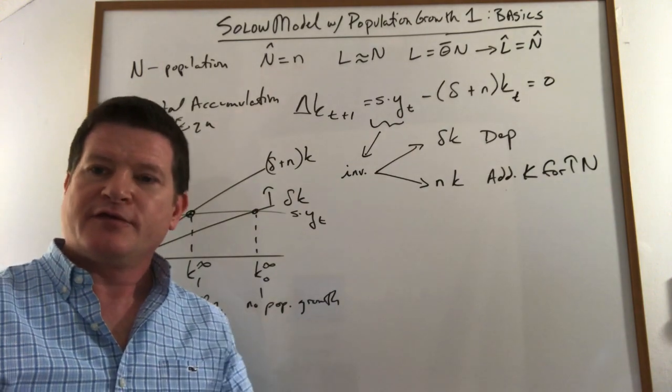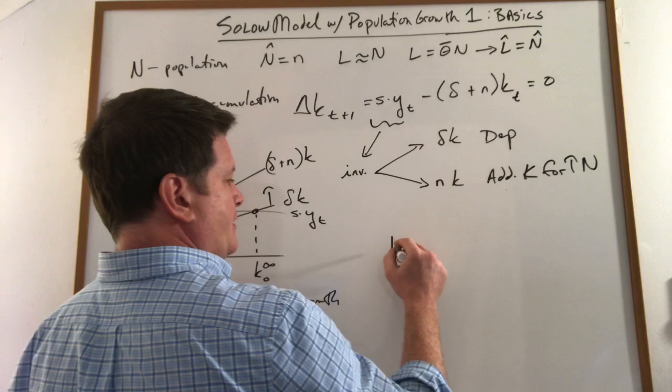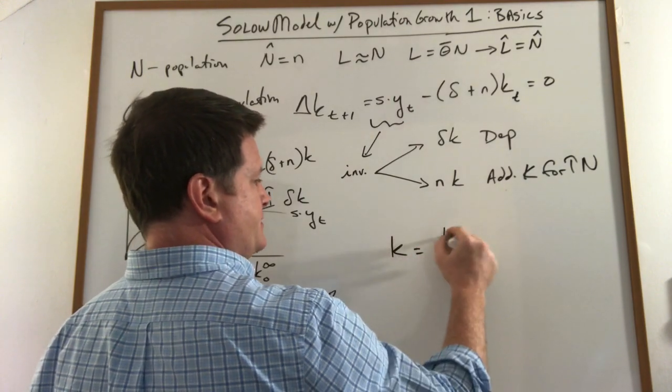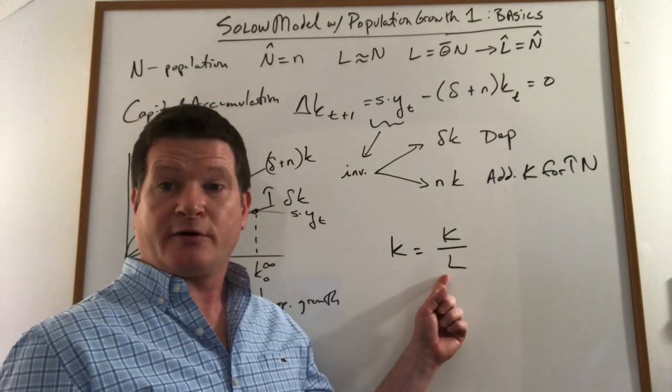Why is that? If you think about it for a minute it makes sense. Little k is big k over L. Total capital divided by worker.